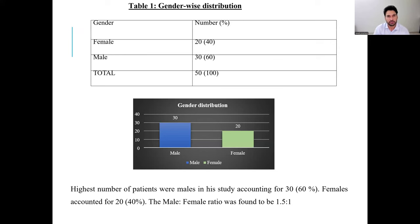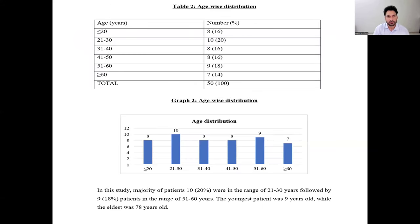Regarding gender distribution, the highest number of patients were male, accounting for 30, and female accounting for 20. The male-to-female ratio was found to be 1.5 to 1. Regarding age distribution, the maximum number of patients were in the range of 21 to 30 years, followed by 9 patients in the range of 51 to 60 years. The youngest patient was 9 years old and the eldest was 78 years old.